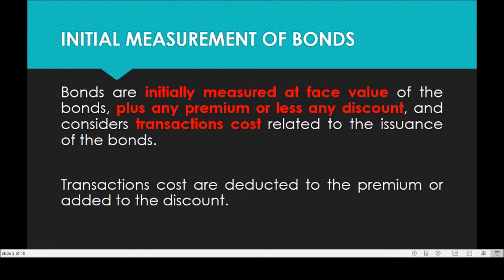Initial measurement of bonds. This is where the accounting issues arise. Bonds are initially measured at the face value of the bonds. However, we need to add any premium if there is one, or deduct any discount, and consider transaction costs related to the issuance of the bonds. So the initial measurement is composed of the face value plus premium, or minus discount, and considering transaction costs — the bond issue costs.